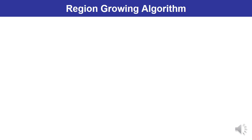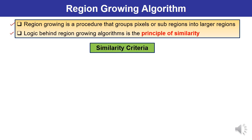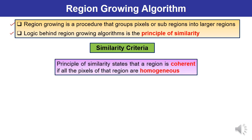You have studied the thresholding algorithm. A major disadvantage of thresholding is that it produces isolated regions, meaning there is a requirement to further process the segmented image to produce a coherent region. This is the concept of region growing — a procedure which groups pixels or sub-regions into a larger region. The objective is to grow the region on the basis of a similarity principle: a region is coherent if and only if all its pixels are homogeneous, with continuity and similarity.